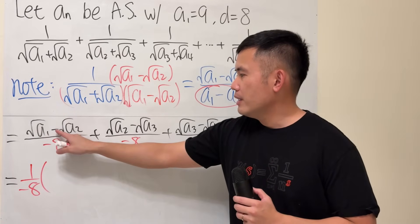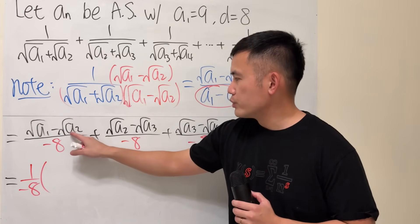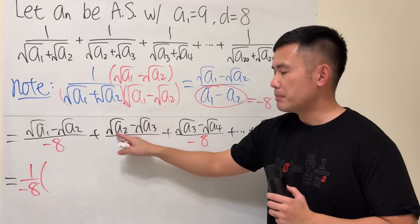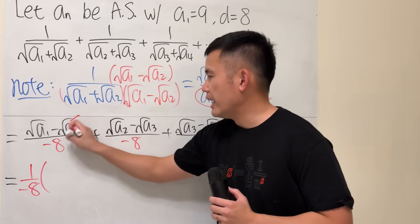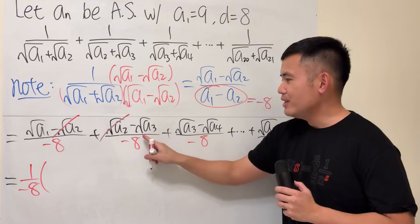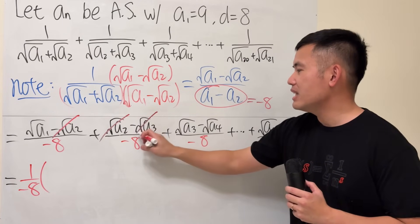First term, by itself. This, we have negative square root of a2. And then, we add positive square root of a2. They cancel each other out. Continue. This plus that. Again, they cancel out.